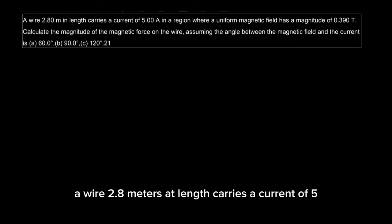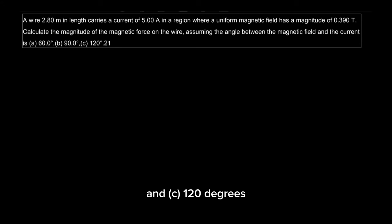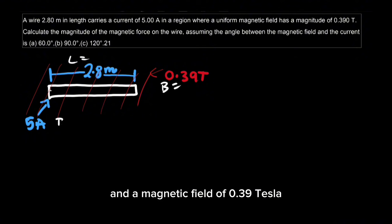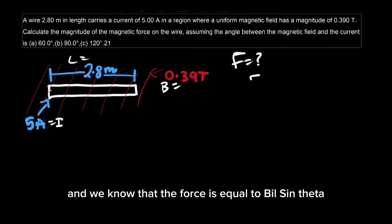A wire 2.8 meters in length carries a current of 5 amperes in a region where a uniform magnetic field has a magnitude of 0.39 tesla. They want the force, and we know that the force is equal to B I L sine theta.